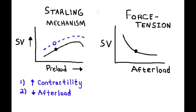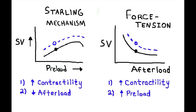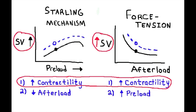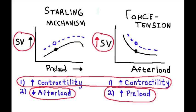The other way to shift the Frank-Starling curve upward is to decrease the afterload — decreasing afterload increases stroke volume. Likewise, the force-tension curve can also be shifted upward with increased beta-1 stimulation and increased contractility. The only other way to shift that curve upward is by increasing the preload. Again, there are only three things that will affect stroke volume: preload, contractility, and afterload.